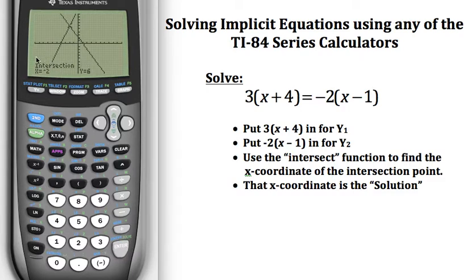Now when I do that, it gives me the intersection point right there in the bottom. X equals negative 2, Y equals 6.